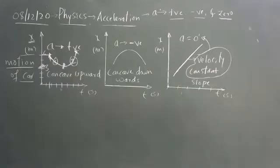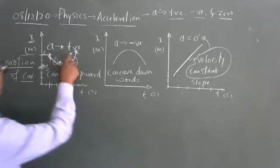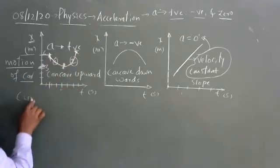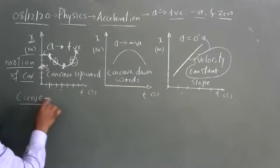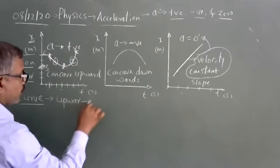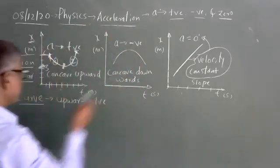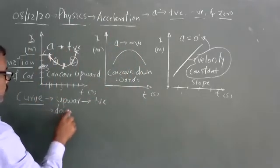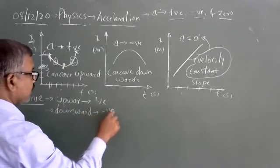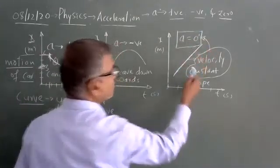We learned that acceleration is positive when the curve is concave upward. Curve upward means positive, curve downward means negative. Acceleration is negative when curve is downward. Now we will check how acceleration is zero.